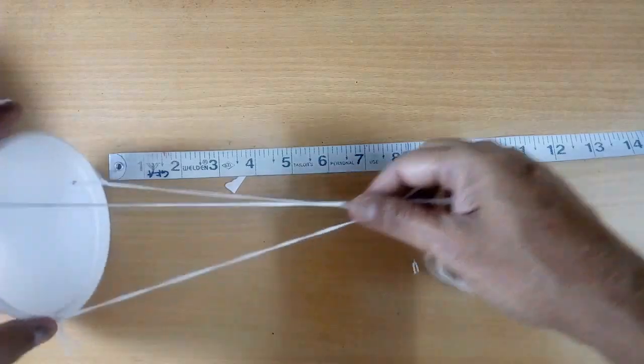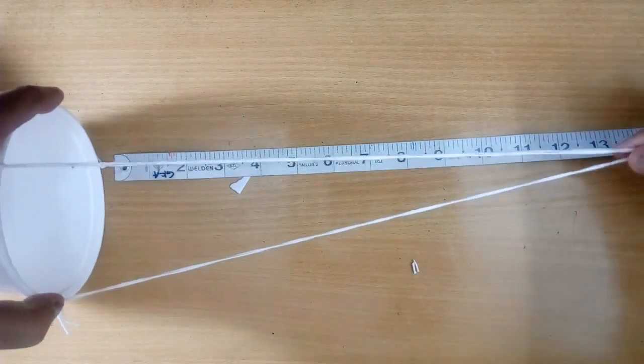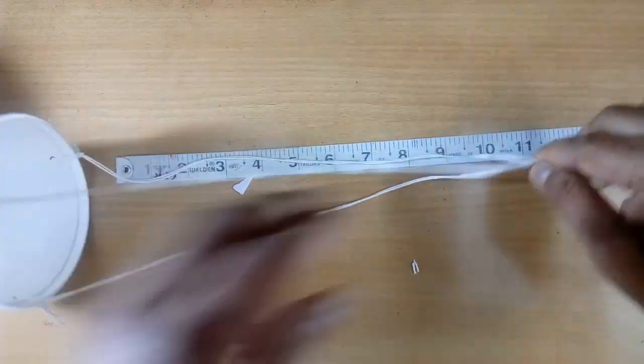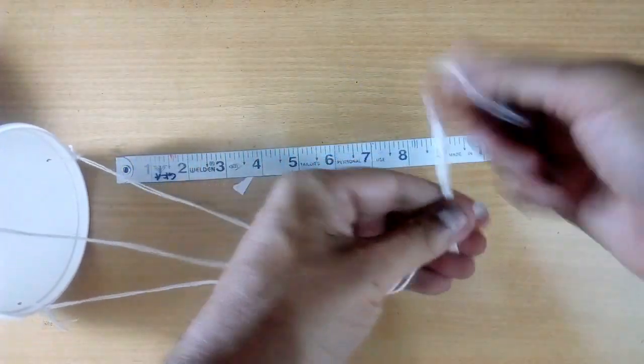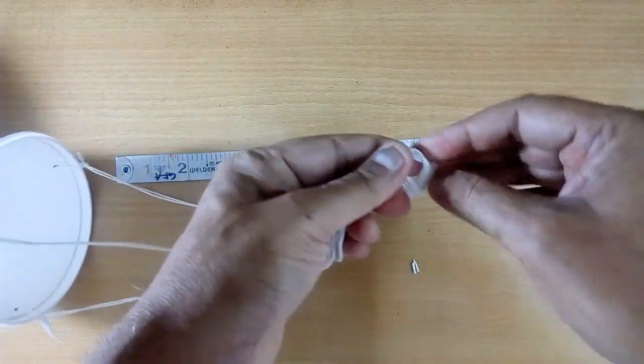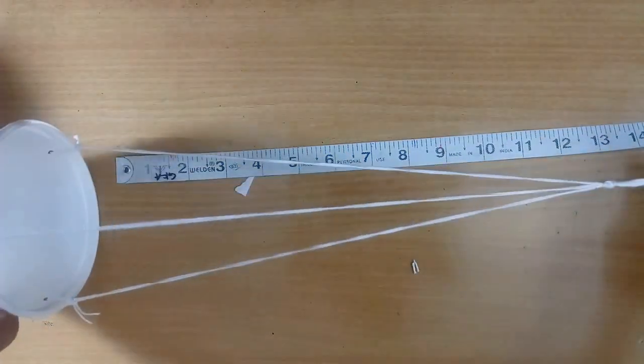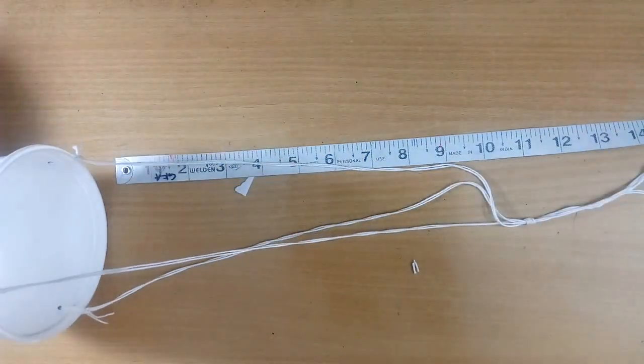Now about 12 inch length, we will make a tie like this. Similar way we will make another one also. Now both boxes are ready.